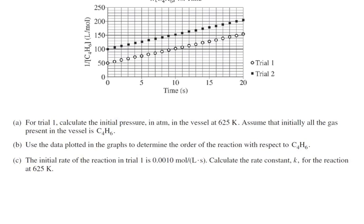For trial 1, calculate the initial pressure in atmospheres in the vessel at 625. Assume that initially all the gas was present as C4H6. Okay, well that kind of sounds like a PV equals nRT problem. So if we were going to try to do that...